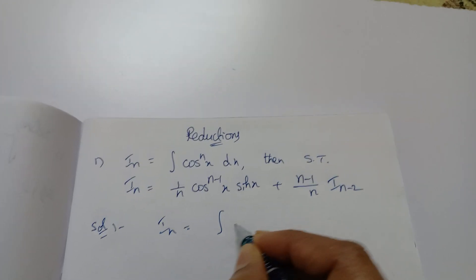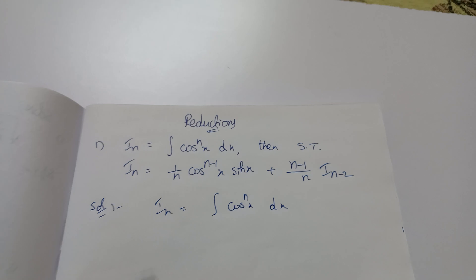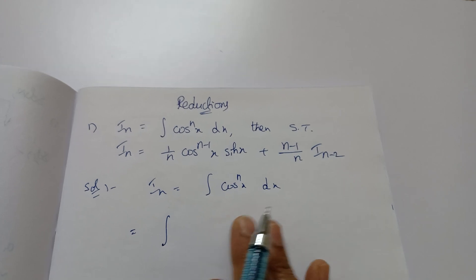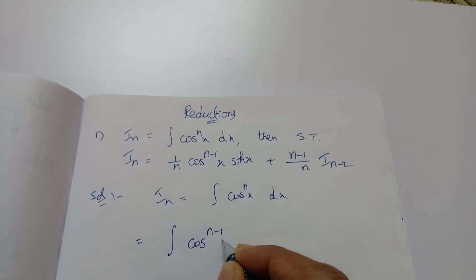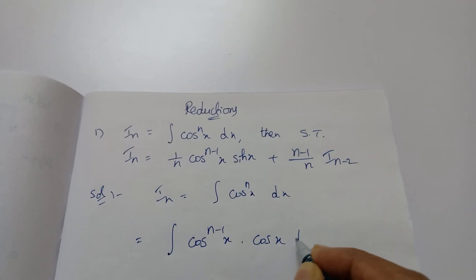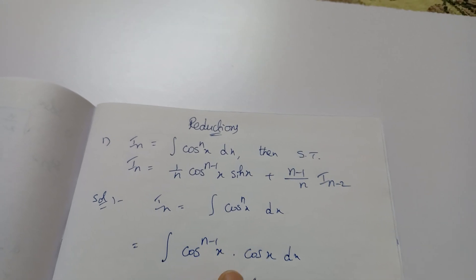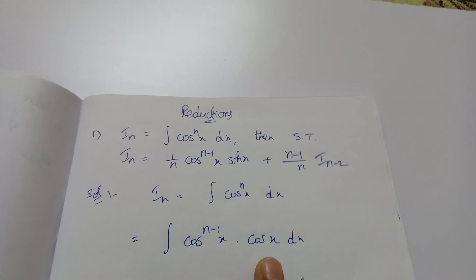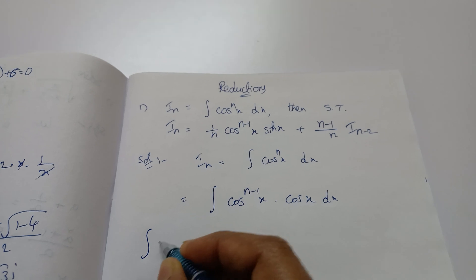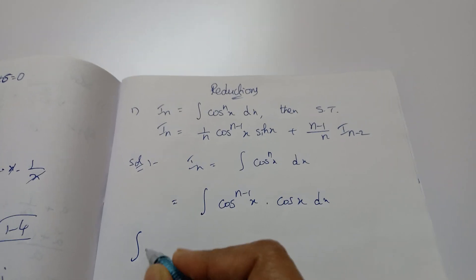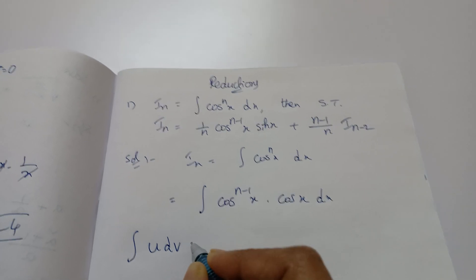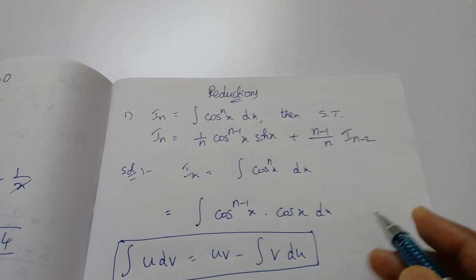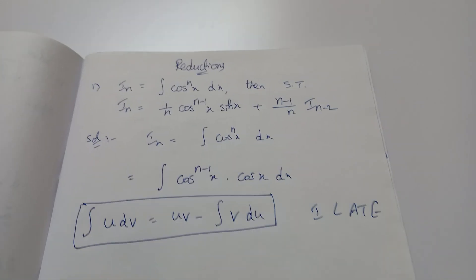The solution: I_n is given as integration of cos^n x dx. Now we want to split this into two parts — two functions. Splitting: cos^(n-1) x into cos x dx. We are using integration by parts. The formula for integration by parts is: integral of u dv = u·v minus integral of v du.